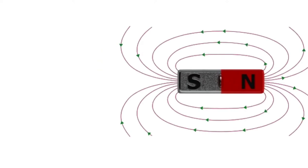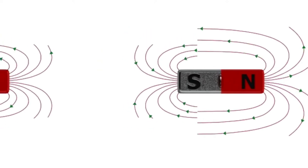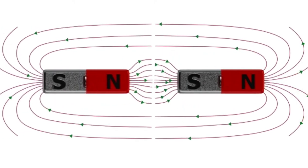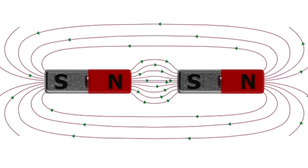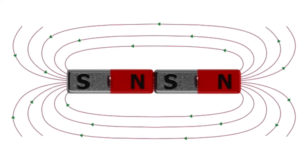If unlike poles of a magnet are facing each other, the forces will attract each other. As you move the magnets closer to each other, the lines of flux join and condense, increasing the forces of attraction.